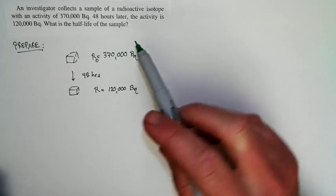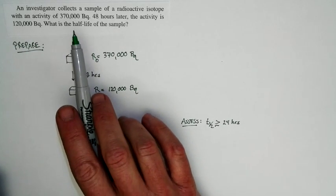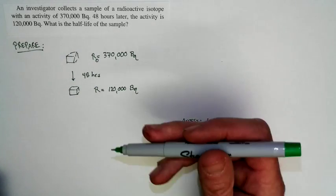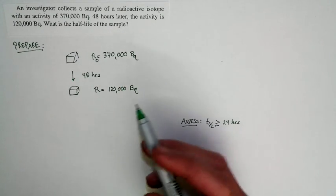Now notice this. I'm saying, I'm doing a calculation for the decrease in the activity, but the decrease in the activity is the same as the decrease in the number of atoms, because the activity is just proportional to the number of atoms you have.